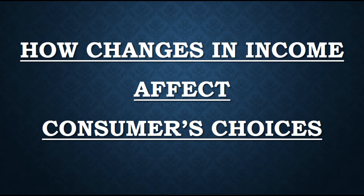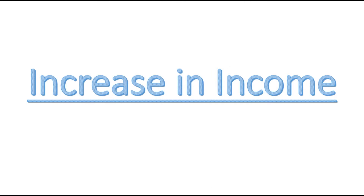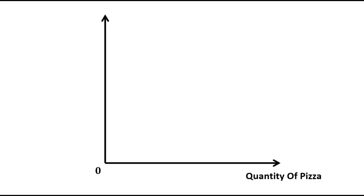Hello students. The next topic is how changes in income affect consumers' choices. Suppose that there is an increase in income of the consumer. Here we have two axes — on the horizontal axis we have taken quantity of pizza, and on the vertical axis we have taken quantity of Pepsi. This is the consumer's initial budget constraint.